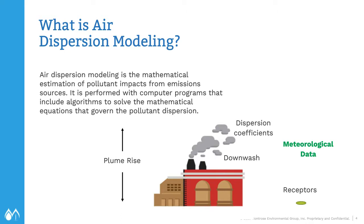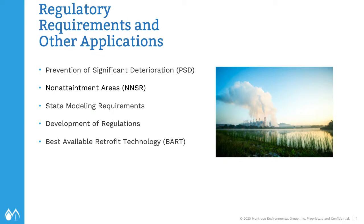Let's look at some regulations that require air dispersion modeling. Dispersion models can be used to determine whether a new source or changes to an existing source will adversely impact an area. For example, they are used to determine compliance with the National Ambient Air Quality Standards, or NAAQS, for prevention of significant deterioration, or PSD, regulations. Some states have specific modeling requirements — some for criteria pollutants, some for toxic air pollutants, and some for both.